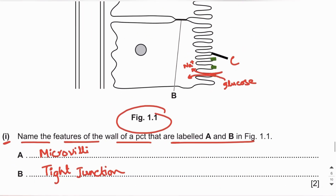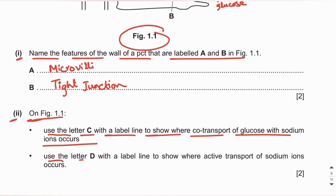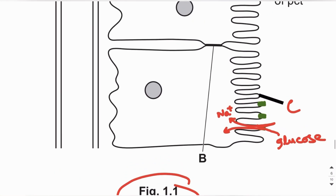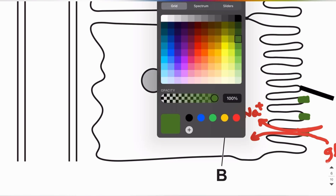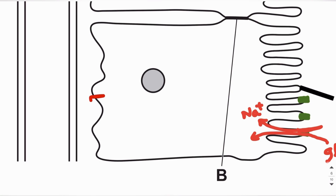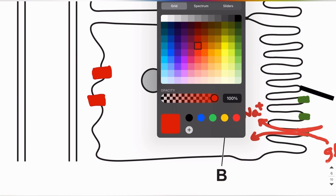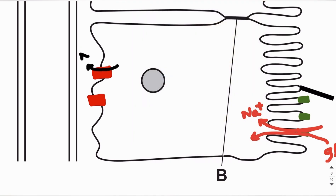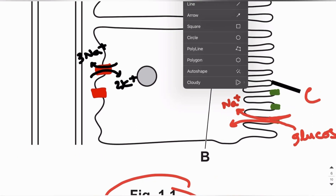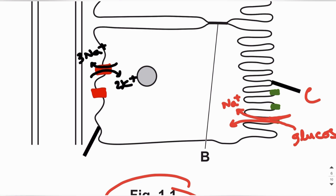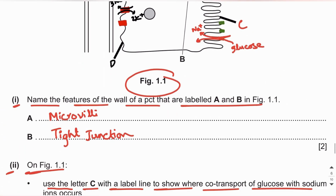Use the letter D to show where active transport of sodium ions occurs. In the basal membrane, there are sodium-potassium pumps involved in the active transport of sodium ions. These pumps transport sodium ions out of the cell and potassium ions into the cell — for every three sodium ions pumped out, two potassium ions are pumped in. We label D at the basal membrane where this active transport occurs.